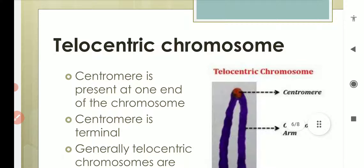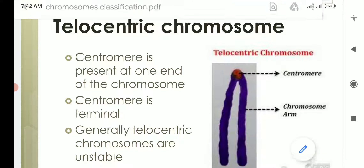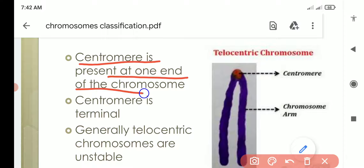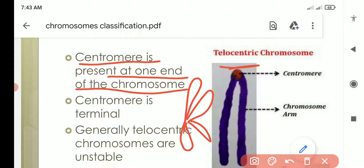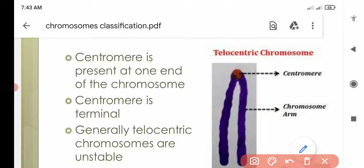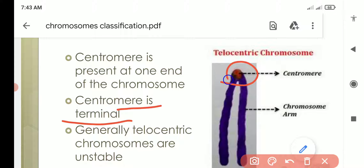The fourth type of chromosome is telocentric chromosome. When the centromere is present at one end of the chromosome, this is known as telocentric chromosome. Telo means telomere — we know that each chromosome has ends that are known as telomeres, as we discussed when talking about parts of the chromosome. If the position of the centromere is at the end — either the upper end or the lower end — then this is known as telocentric chromosome. In telocentric chromosome, the centromere is present at the terminal part, so we say the centromere is terminal because it is present at the end.